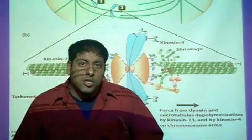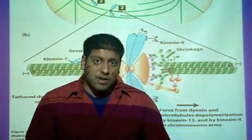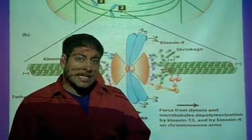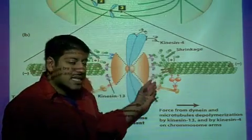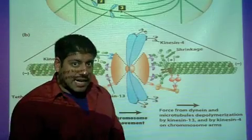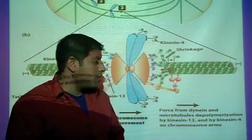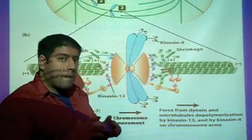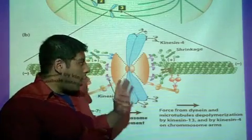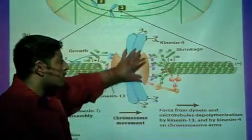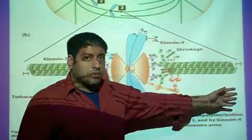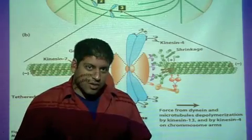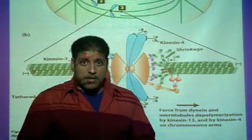That's what to understand out of anaphase A. Kinesin-7 is a motor protein pushing the chromosome towards the right of the cell. Kinesin-13 is a destabilizing protein on the right side of the chromosome. Dynein is a minus-end-directed motor protein coming off of the kinetochore, walking towards the minus-end of the microtubule, pulling on the chromosome, ultimately to get it moved towards the right pole. Please replay and listen to this a few times, and email with questions.